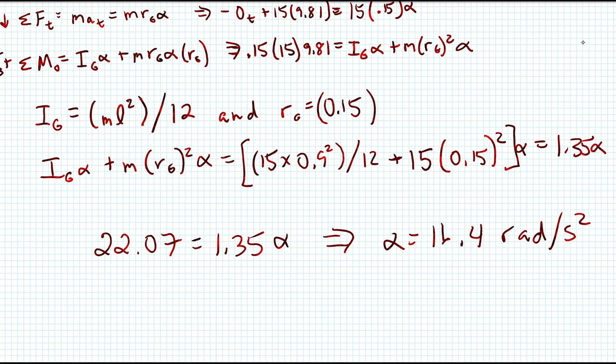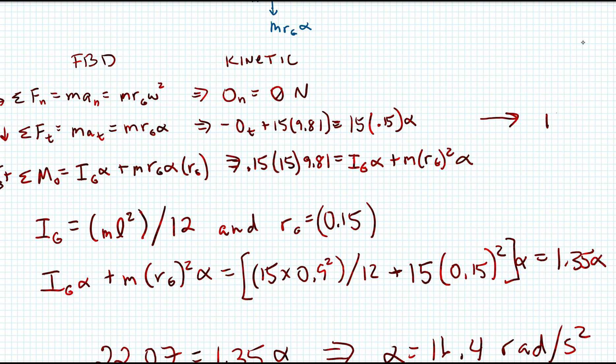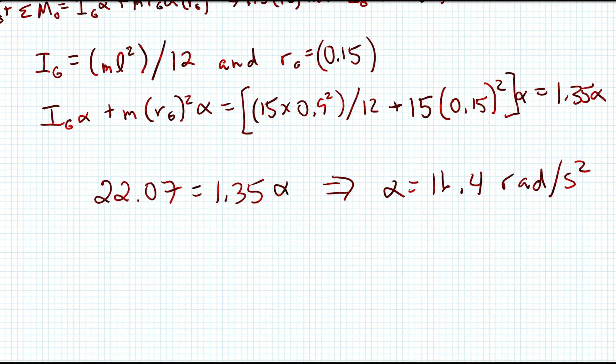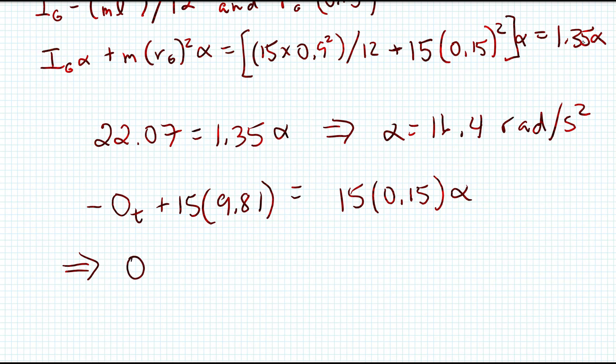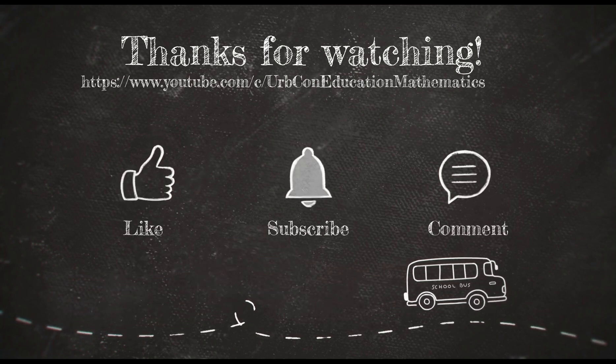From equation one, we have negative O T plus 15 times 9.81 equals 15 times 0.15 alpha. That brings us O T equals 15 times 9.81 minus 15 times 0.15 times 16.4, and that gets us 110 newtons.